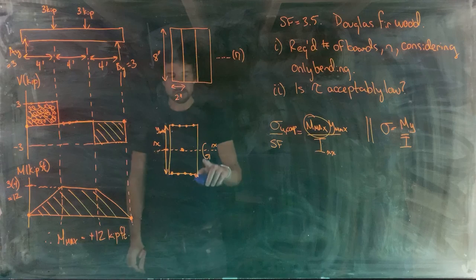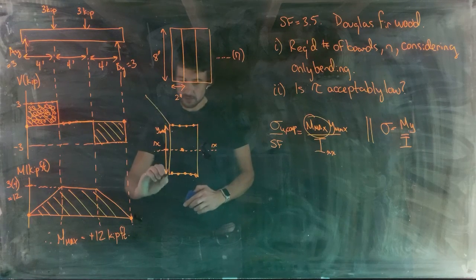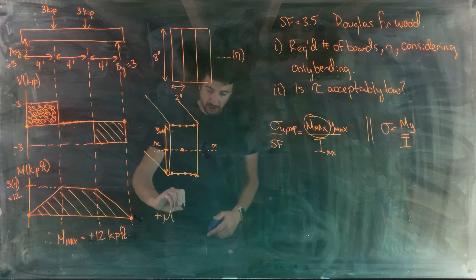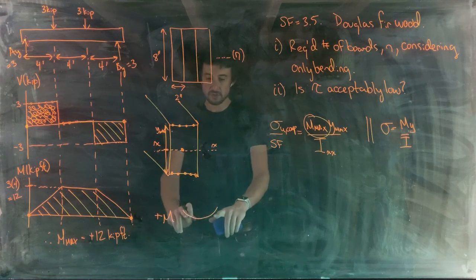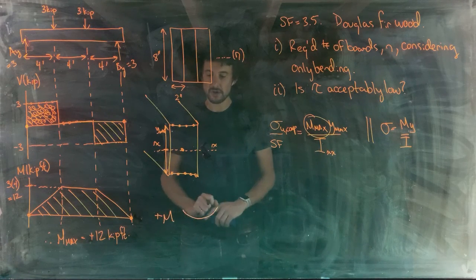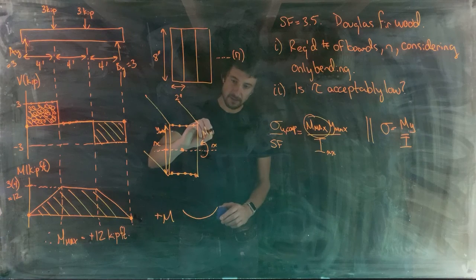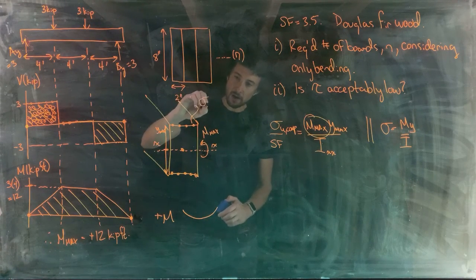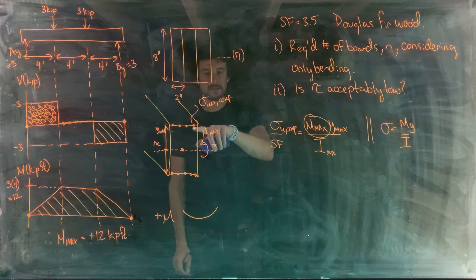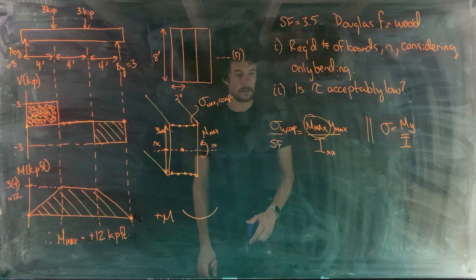The maximum moment is positive 12 kip-feet. A positive internal moment bends the beam into a smiley-face shape — compression on top, tension on the bottom. So the maximum compressive stress locations are at the top of the cross section, and that's what we compare to the ultimate compressive strength.